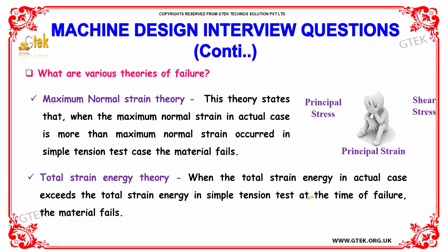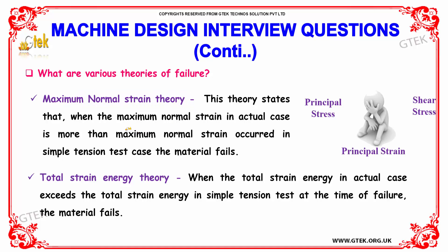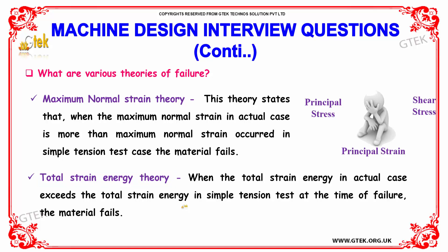The next failure theory is the maximum normal strain theory, which states that when the maximum normal strain in the actual case is more than the maximum normal strain in a simple tension test, the material fails. The total strain energy theory states that when the total strain energy in the actual case exceeds the total strain energy in a simple tension test at the point of failure, the material fails.